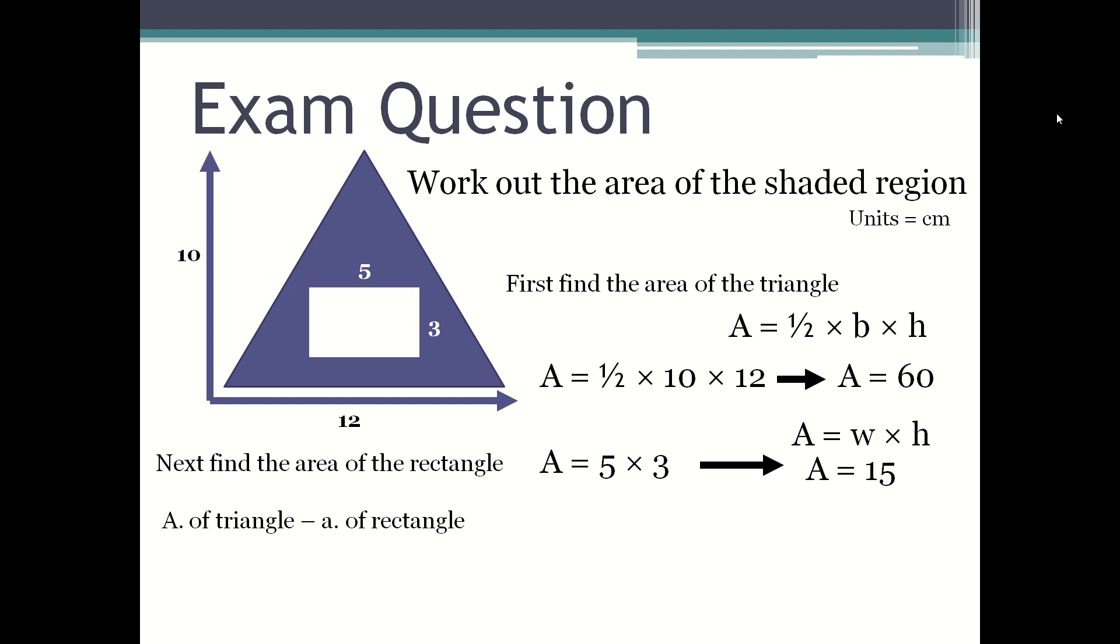To find the area of the shaded region, you have to subtract the area of the rectangle from the area of the triangle, which is sixty minus fifteen, which equals forty-five.